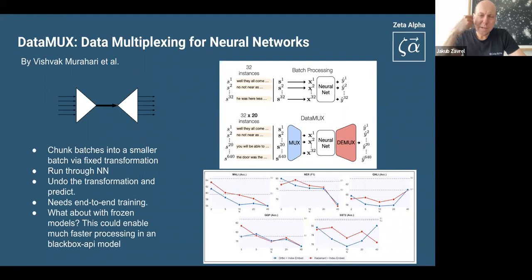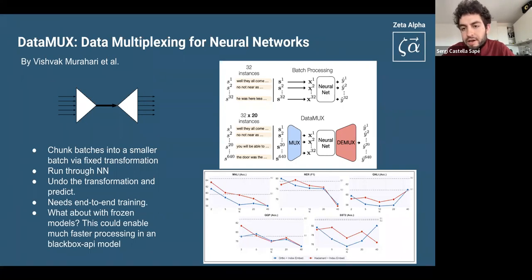So is this during inference or during training that they do this? Here they both train and do inference with this mechanism. But I think that where the mechanism shines is inference. So you can basically do batch inference on much larger batches. So imagine you only have access to a GPT-3 API and you can do batch inference on that, but you have a limit on batch size. If you can cram into that like a batch that's 10 times the size of that with this mechanism, you can speed up your application by a lot.